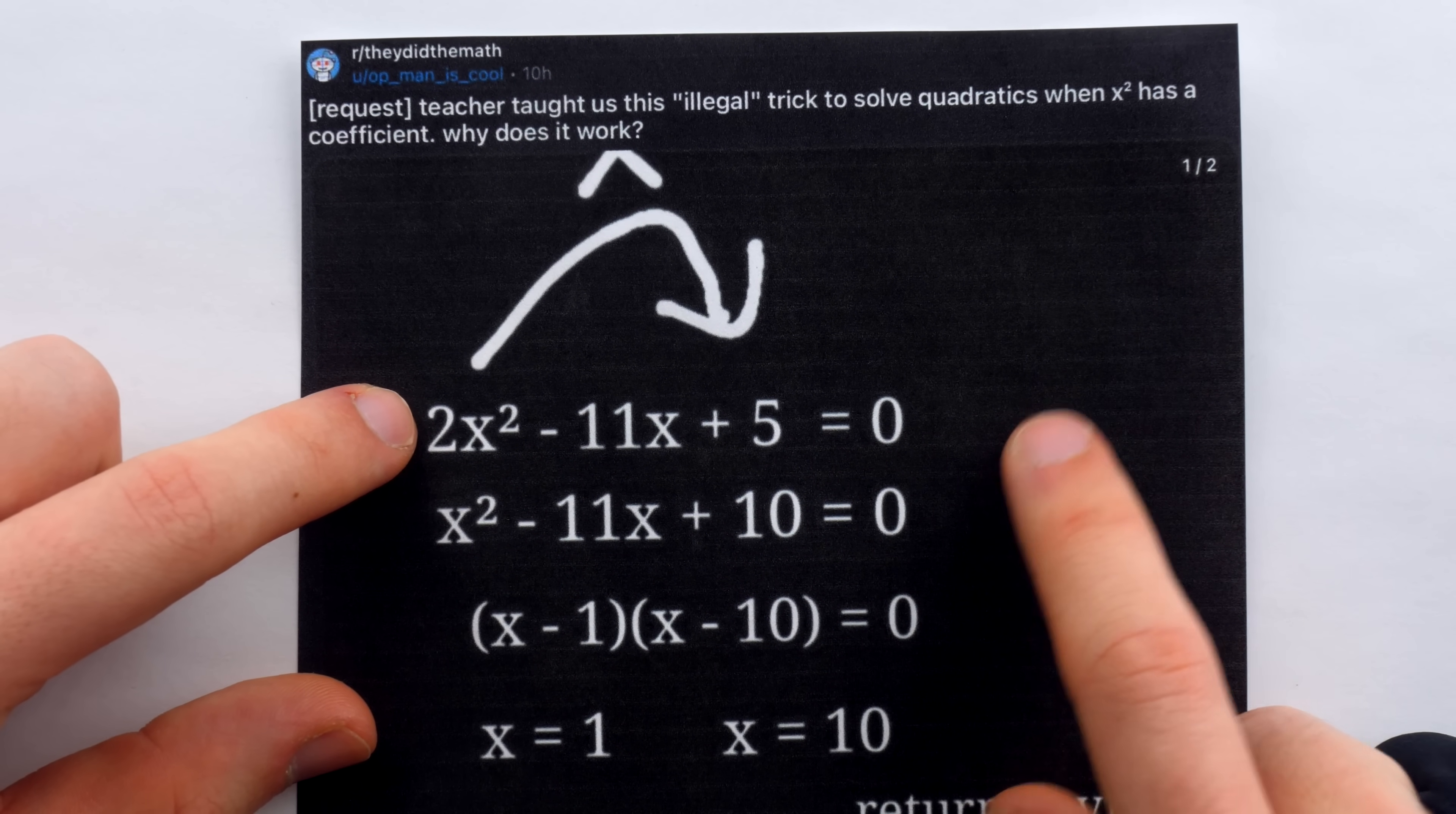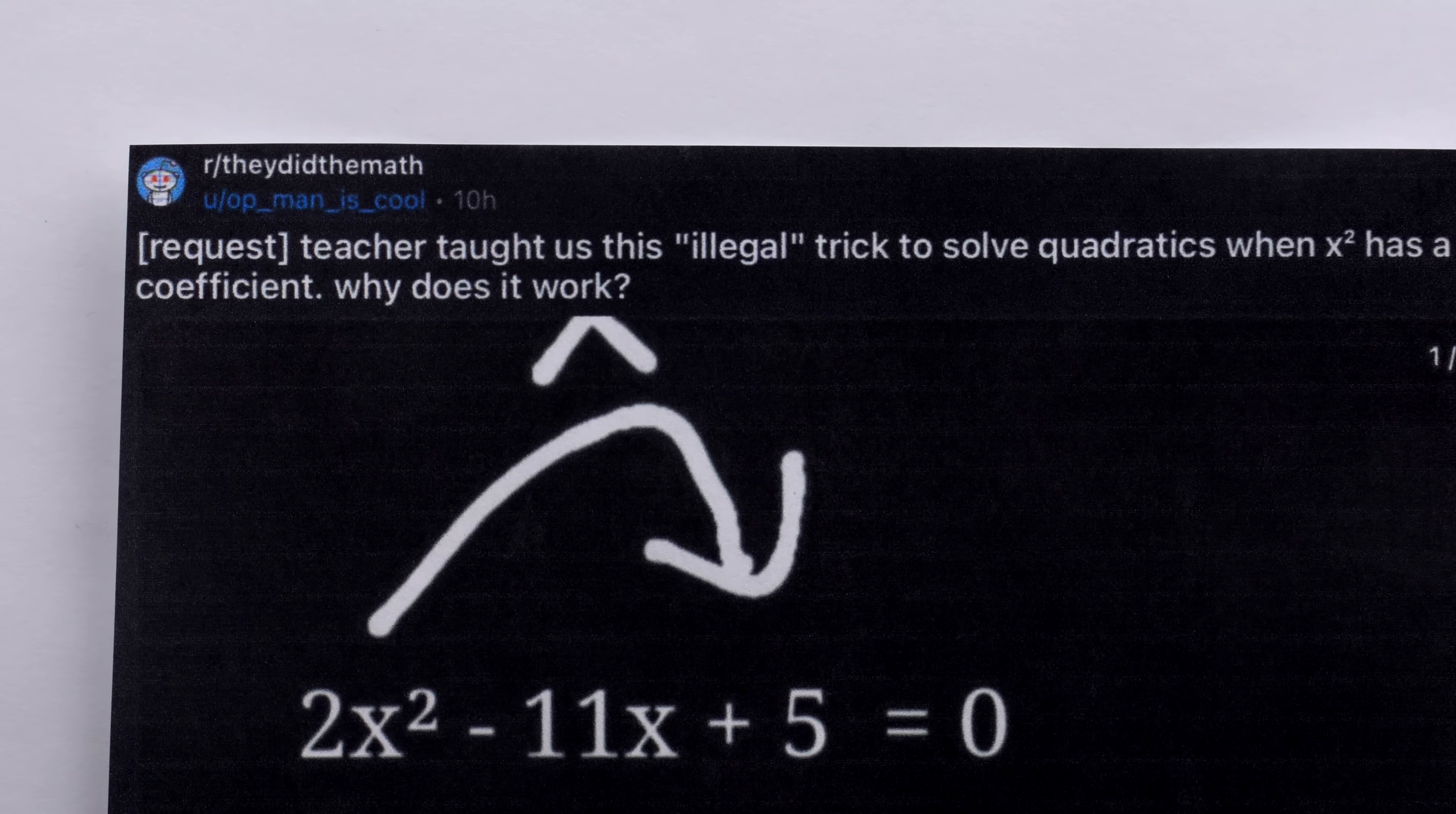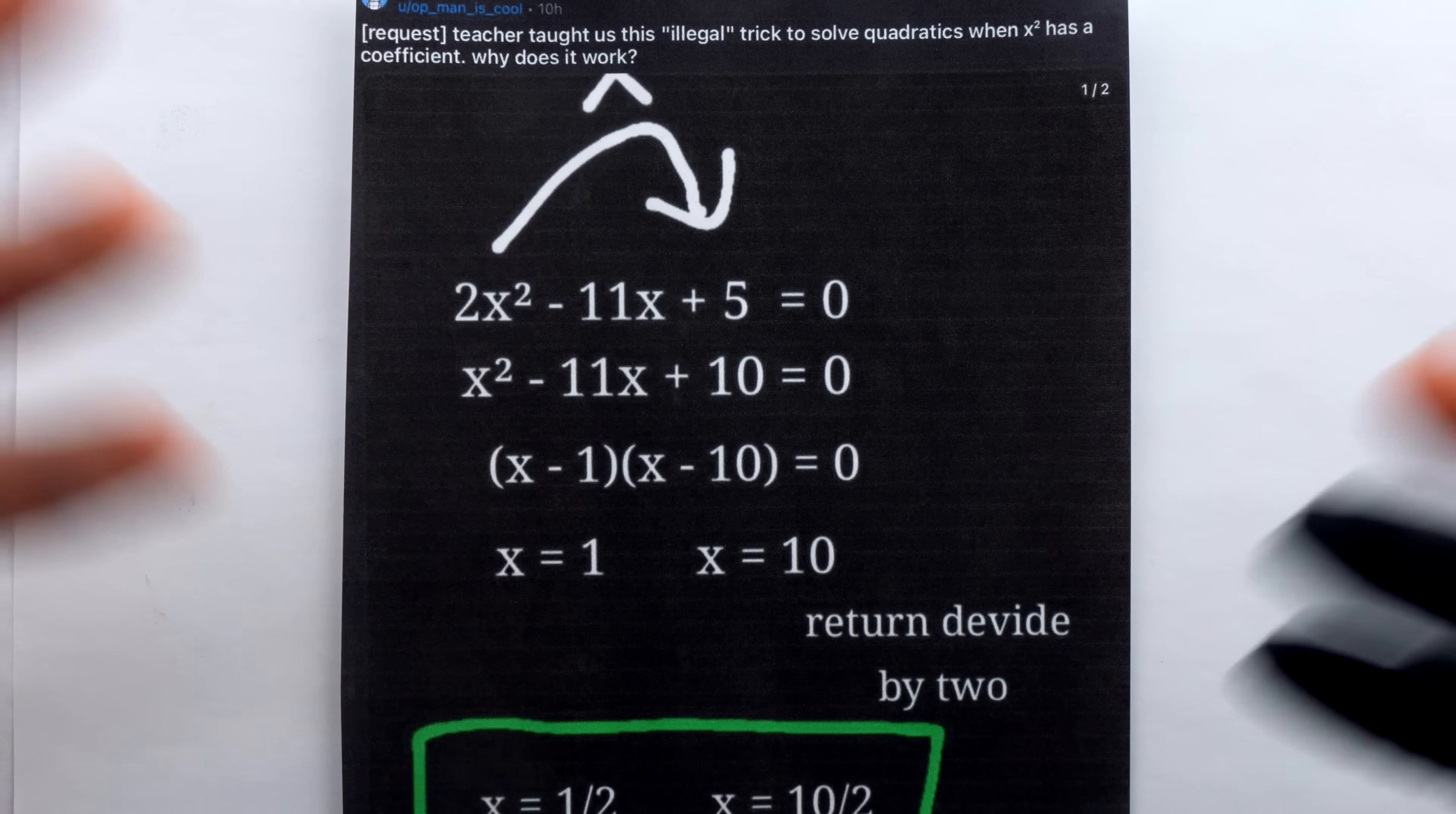I just saw this trick today for solving quadratic equations that apparently the instructor described as illegal because emotionally that's how it feels. But in fact, this snappy trick which completely gets rid of that leading coefficient is totally legal. Mathematically, it is valid and I'll show you why. First, let me show you the trick.